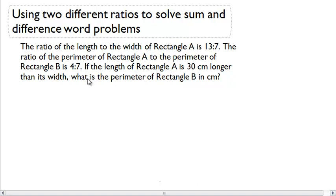Alright, here we go. A lot going on with this problem. Let's start off with Rectangle A. We know that Rectangle A, if we were to sketch it out, has dimensions that are in a ratio of 13 length and 7 width.